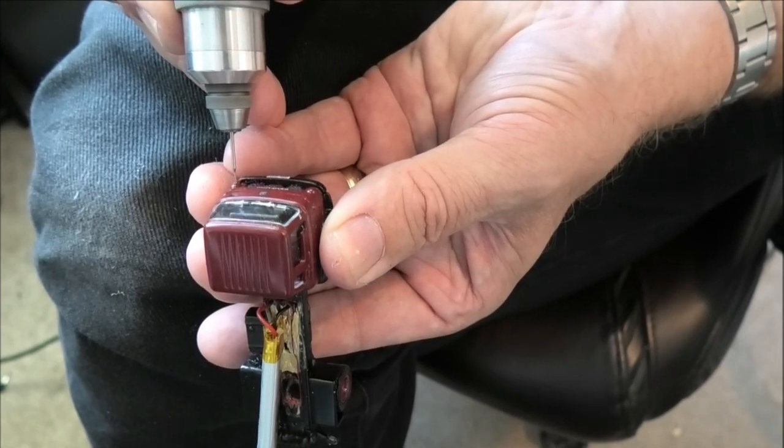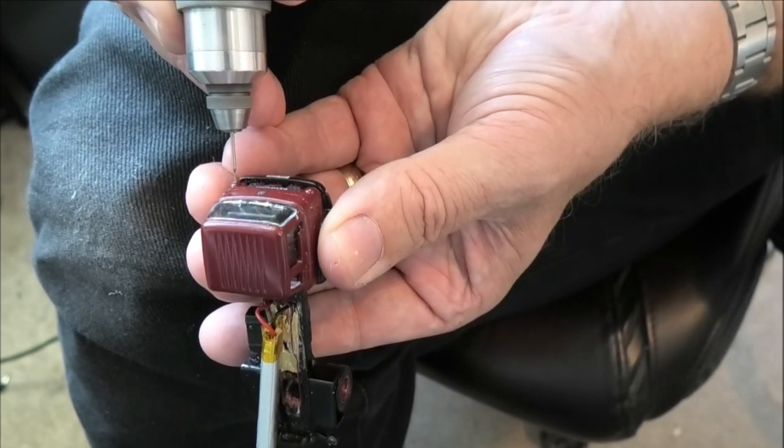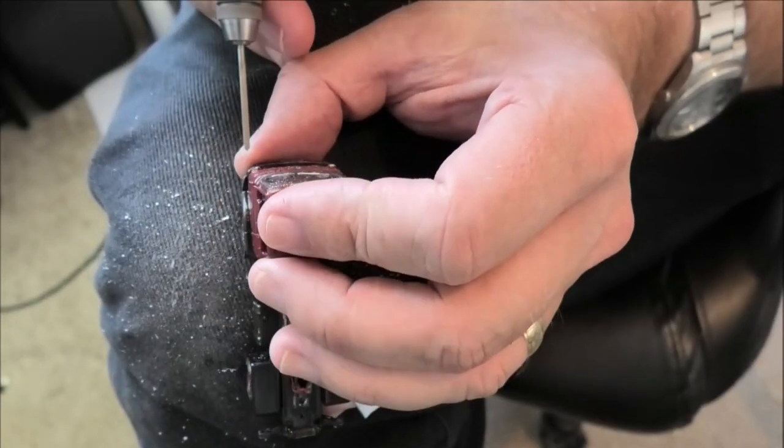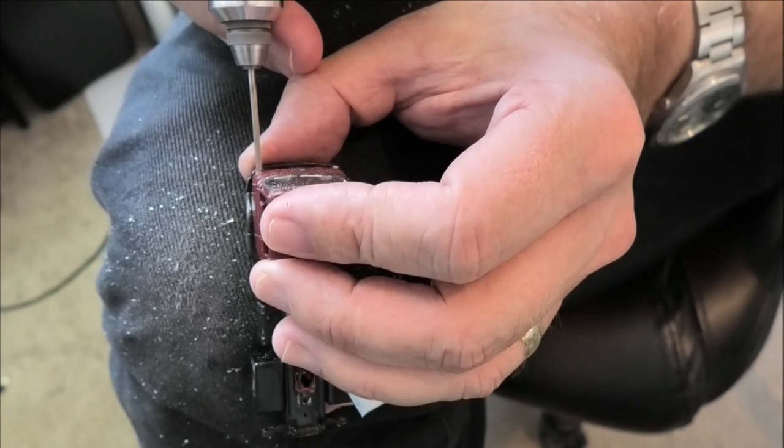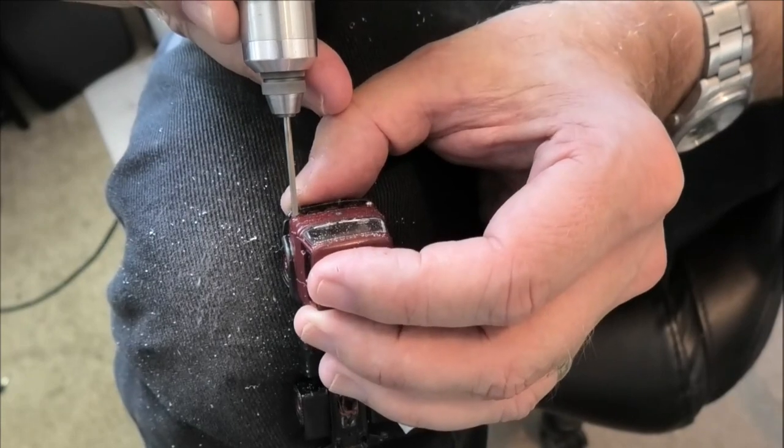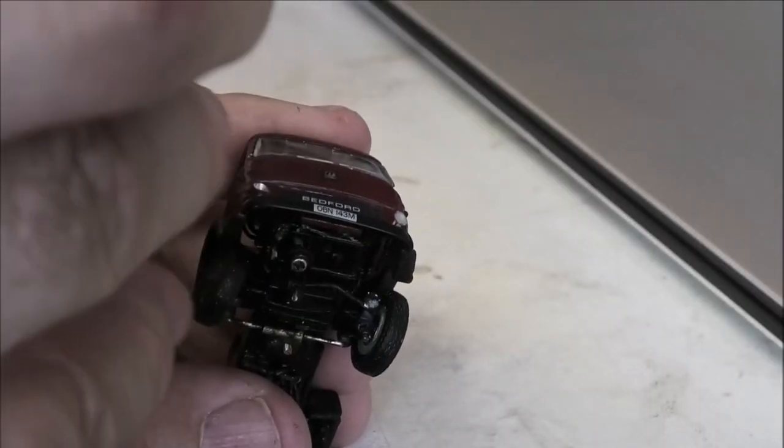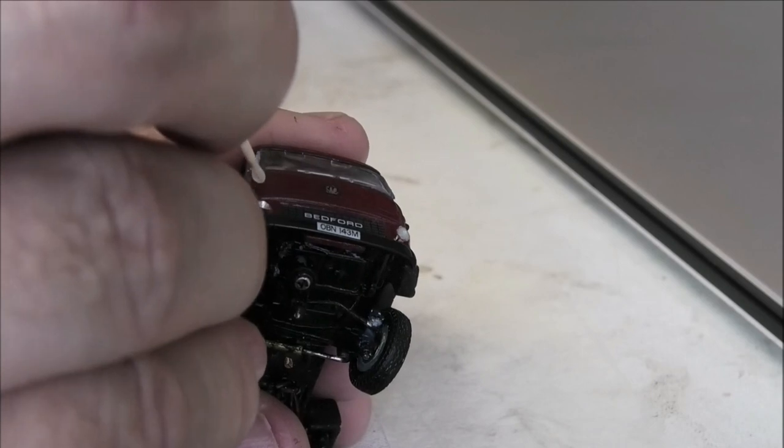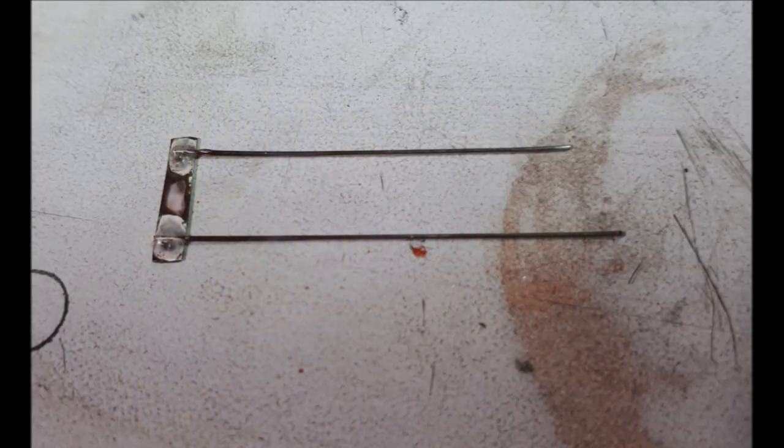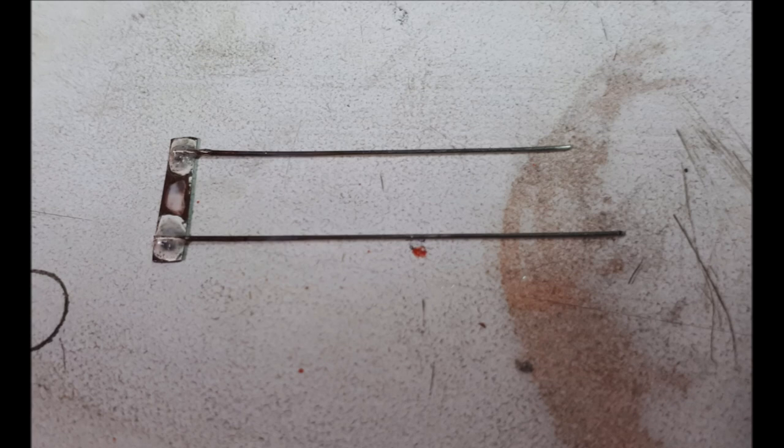The headlights are also a disappointment on this vehicle, so being just cast, I drill them out with a 0.8 mil drill or thereabouts and then follow that up with a two mil drill, just drilling down enough to mimic a reflector at the back of a headlight. So left with bare shiny metal forming a reflector and then I drip in a little bit of epoxy to replicate the headlight lens. It works very well.